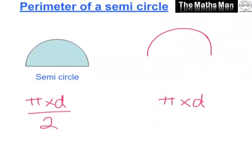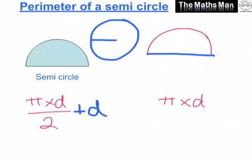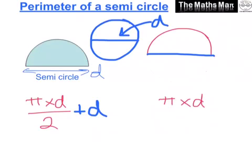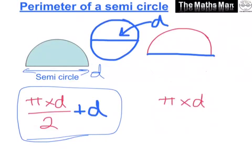That's not exactly what we want because in the semicircle we have another length over here. So we then always need to add this extra length in to complete our semicircle. We need to plus another d, because if we cut a semicircle we can see that this here is the diameter — it goes from one side of the circle to the other side and through the center. So this length from here to here is the diameter. The formula to work out the perimeter of a semicircle is pi times d, divided by two, and then add d again.